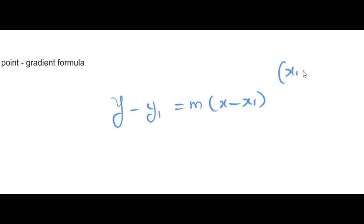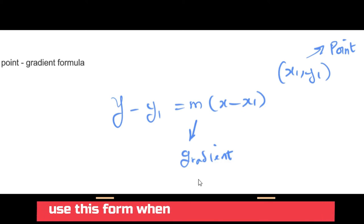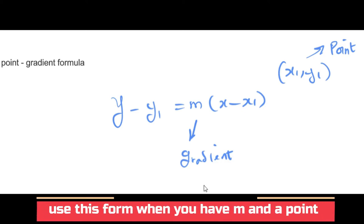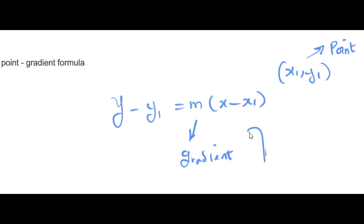In the point-gradient formula, x₁ and y₁ represent a point that passes through the straight line, and M, as usual, represents your gradient. So if you can calculate or are given the gradient and you also have a point on the line, you can use this format and substitute those values in.